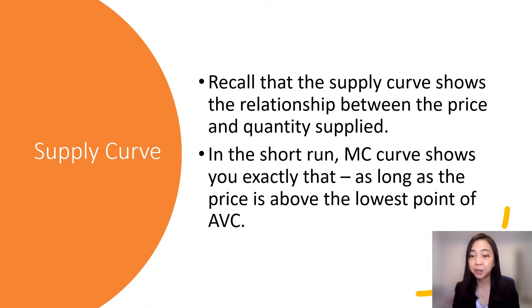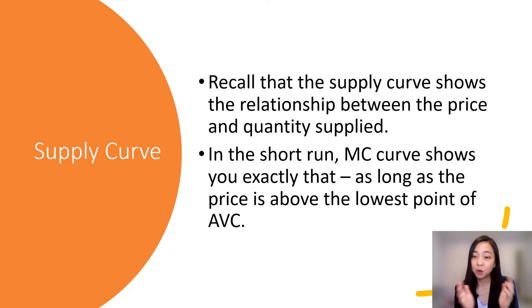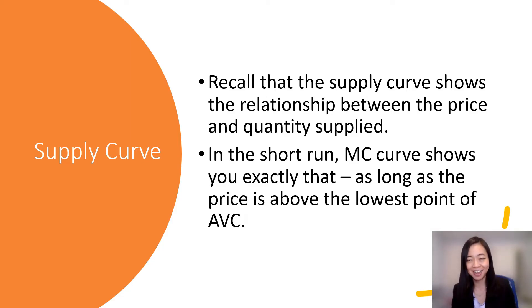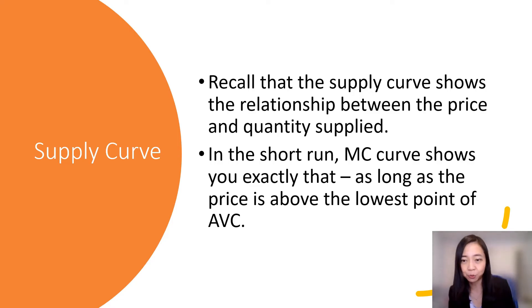Remember that the supply curve shows you the relationship between the price and the quantity supplied. Now in the short run for a perfectly competitive firm, the marginal cost curve shows you exactly that. So imagine the marginal cost curve is someone who will tell you: give me a price and I will tell you how much you should produce, as long as the price is above the average variable cost.